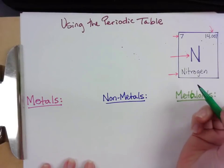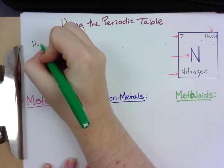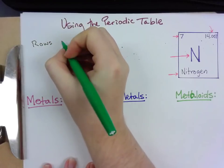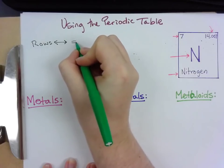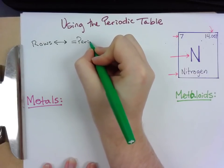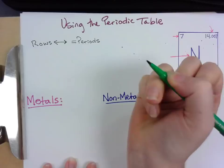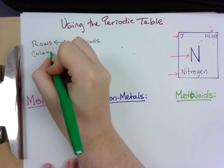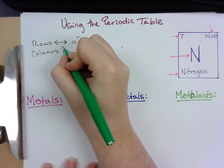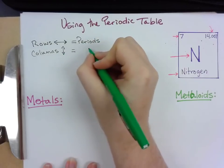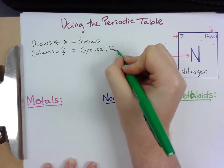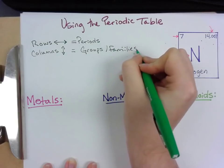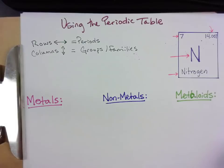So using the periodic table, my rows, which go left and right horizontally, are called periods. And my columns, which go up and down vertically, are called groups — they're also called families. So rows are periods, columns are groups and families.